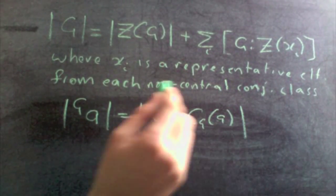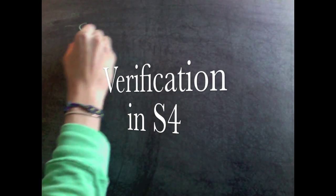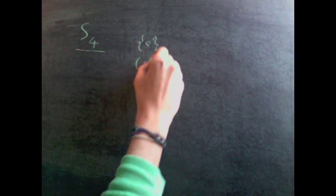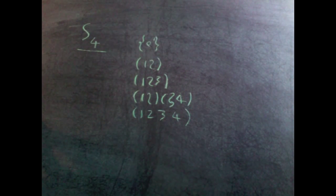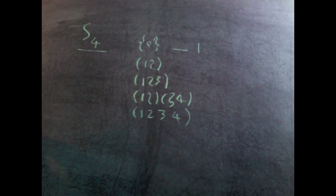So they're equivalent. Ok so let's just see an action to make sure that it actually works. The example I'll use is s4. The conjugacy classes in s4 are the identity, two cycles, three cycles, double transpositions, and four cycles. And what are the size of these classes? There's one identity.